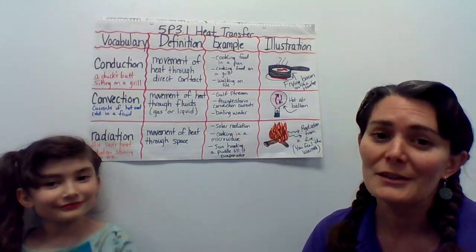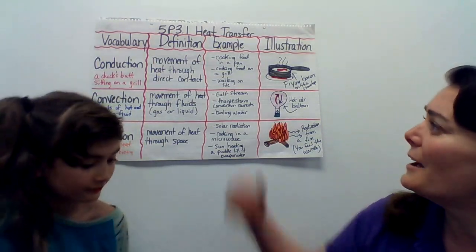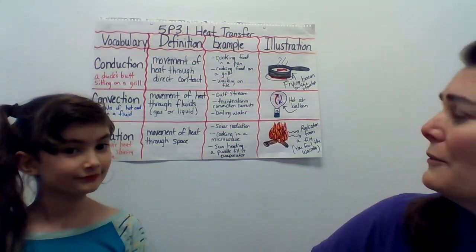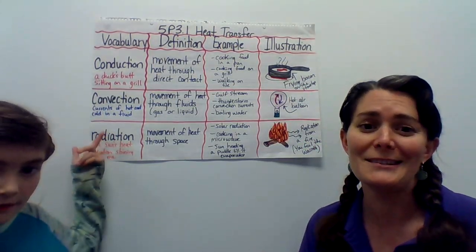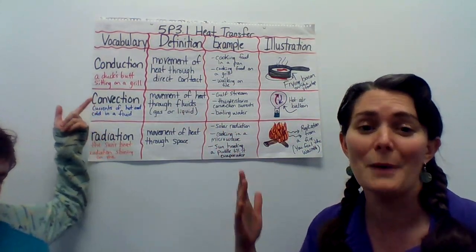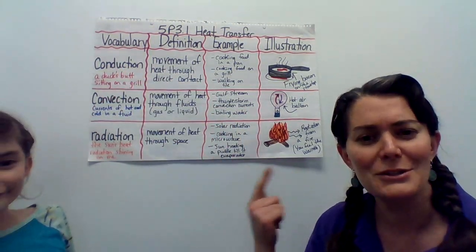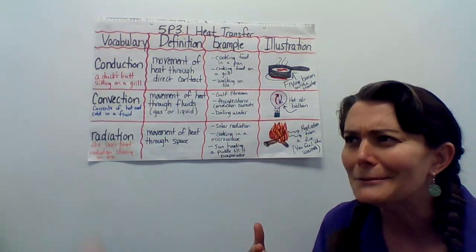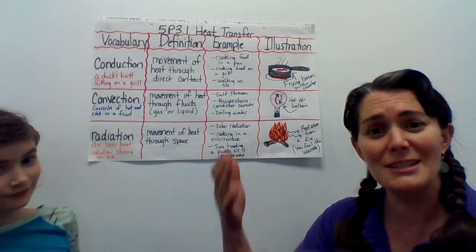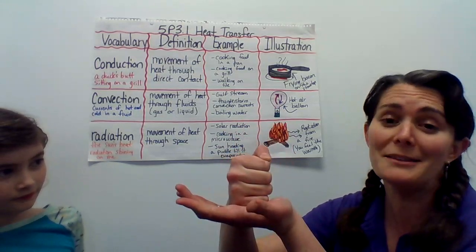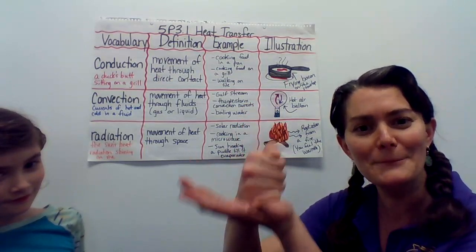You're going to be learning this when you do your PowerPoint lessons and your hands-on home experiments. Conduction is basically the movement of heat through direct contact. When I was a kid, the way I used to remember this is by the name — mnemonics help us to remember things. Conduction sounds like 'a duck,' so I used to remember if a duck was sitting its butt on a grill, that would be direct contact. So conduction: a duck's butt sitting on a grill.